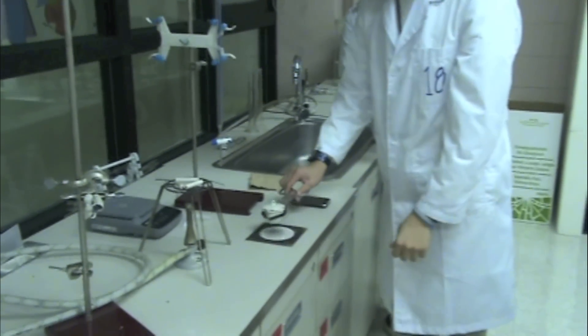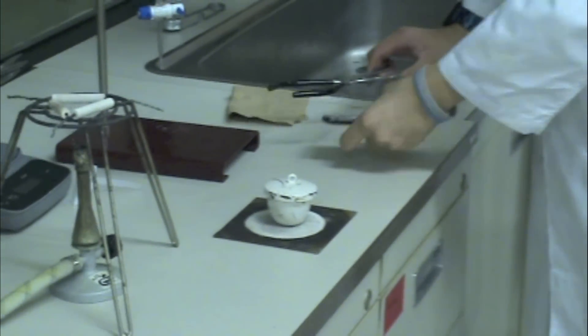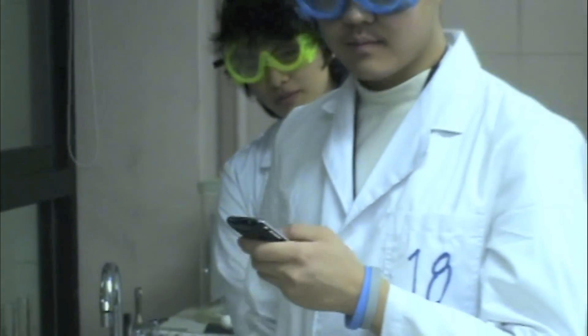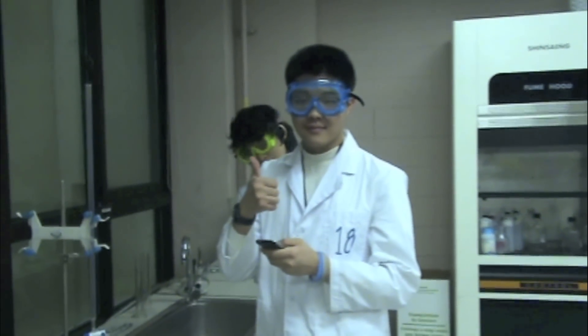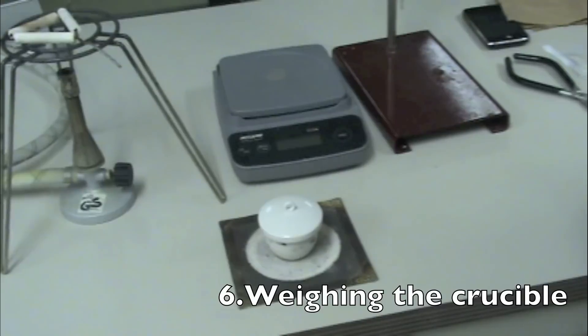Also, don't forget to close the lid during the cooling to prevent outside contaminants from entering. Allow both the crucible and lid to cool to room temperature on the wire gauze.